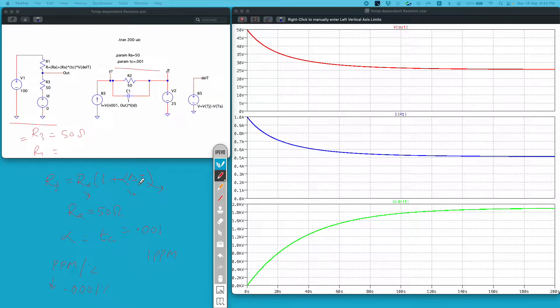Now to model this delta T I have created this thermal network. R2 and C1 essentially model the thermal time constant of the circuit.